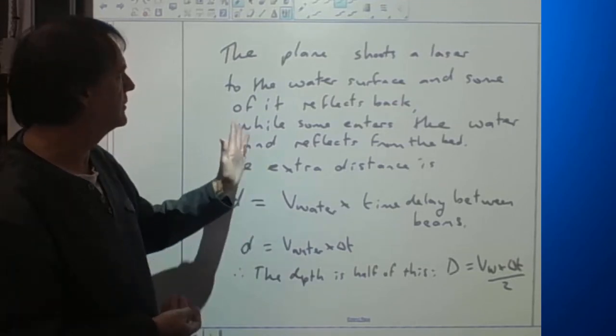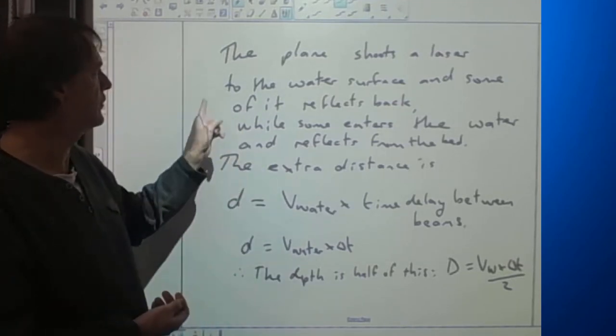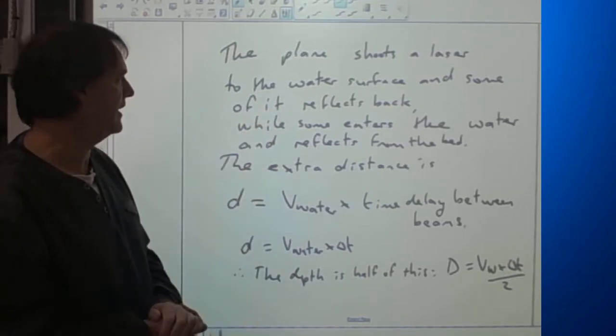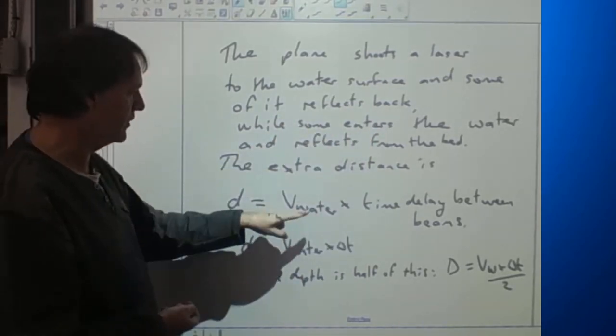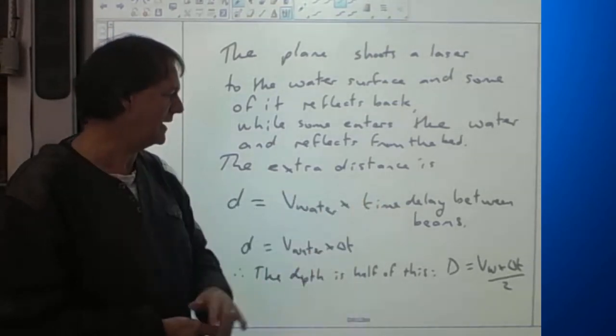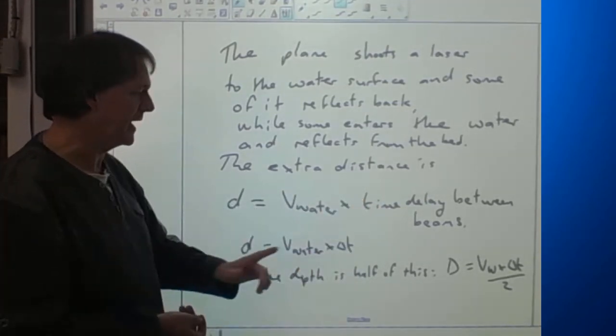So this is one simple answer you could give. The plane shoots the laser beam off the water surface and some reflects back while some enters the water and reflects from the bed, and the extra distance is the velocity in water times by the time delay, and therefore the depth would be half of that.